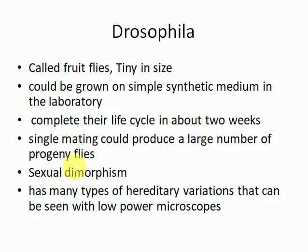Sexual dimorphism can be easily observed in Drosophila — we can easily distinguish between male and female Drosophila. There are easily noticeable differences between them. They also have many types of hereditary variations that can be seen with a low-power microscope, so we don't need advanced techniques. Even a simple microscope is sufficient to observe certain effects and variations.